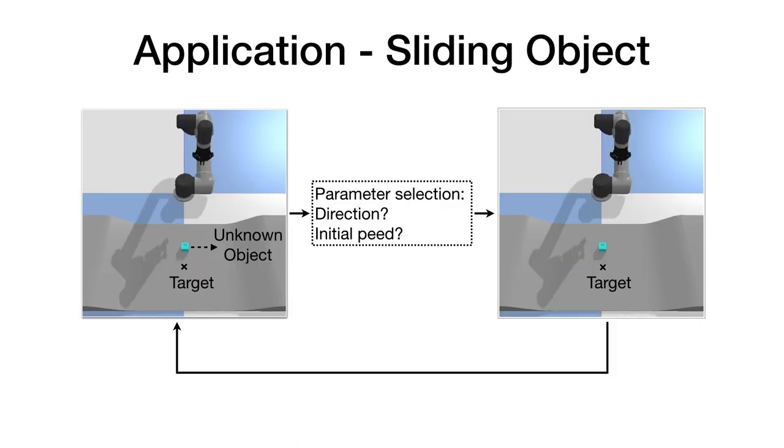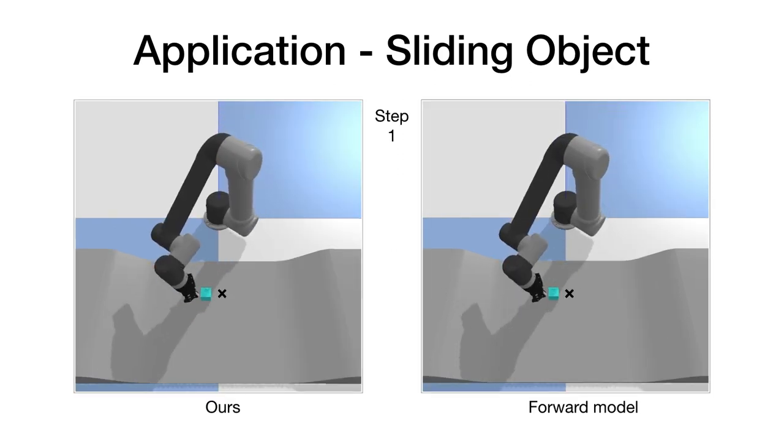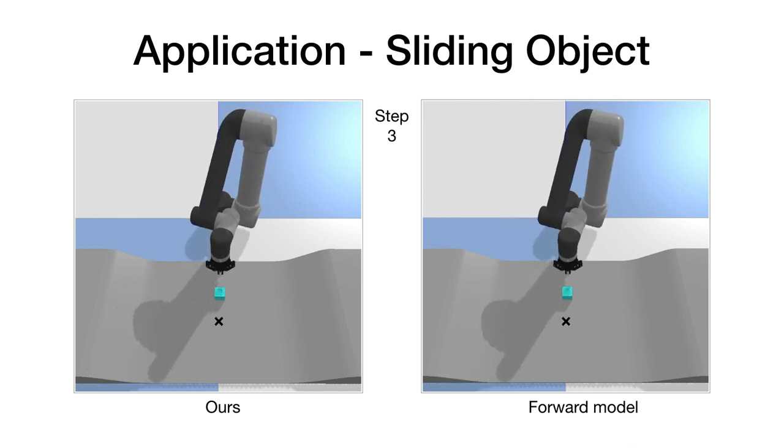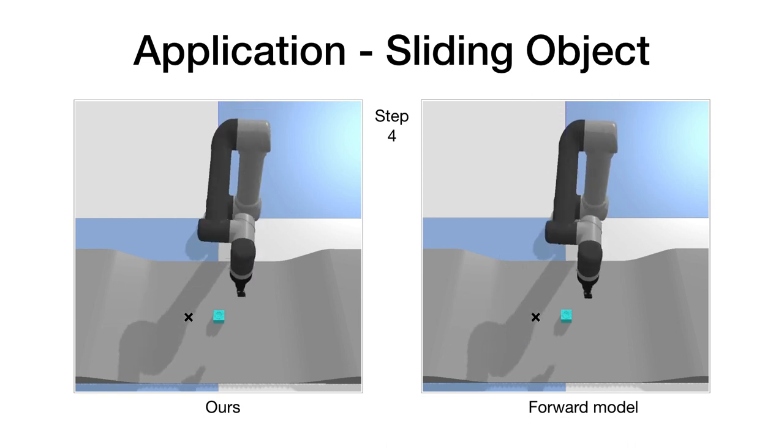We test the learned representation. In this experiment, our task is to slide an unknown object with a selected pushing direction and speed so that the object will slide to the target position. We do this task by using the learned predictive model. Here is a comparison between our model and the forward model, pushing the same cube. Our model achieves better performance after several interactions.